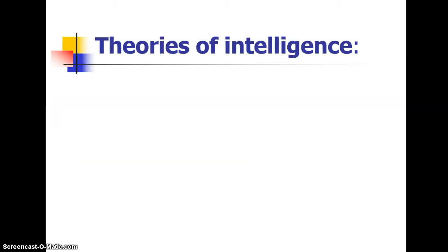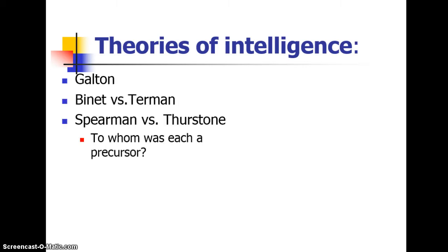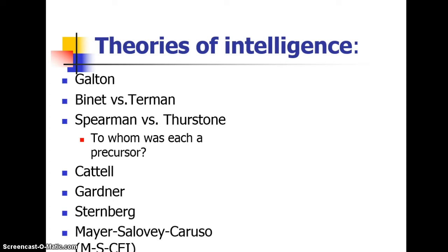For theories of intelligence, we have several key people to know and what they contributed to measuring intelligence, which is not a static thing. Know Sir Francis Galton, Binet versus Terman — who was nature, who was nurture — Spearman versus Thurstone and to whom each was a predecessor. Also know Cattell's idea, Gardner's idea, Sternberg's idea, and the emotional intelligence of Mayer, Salovey, and Caruso.